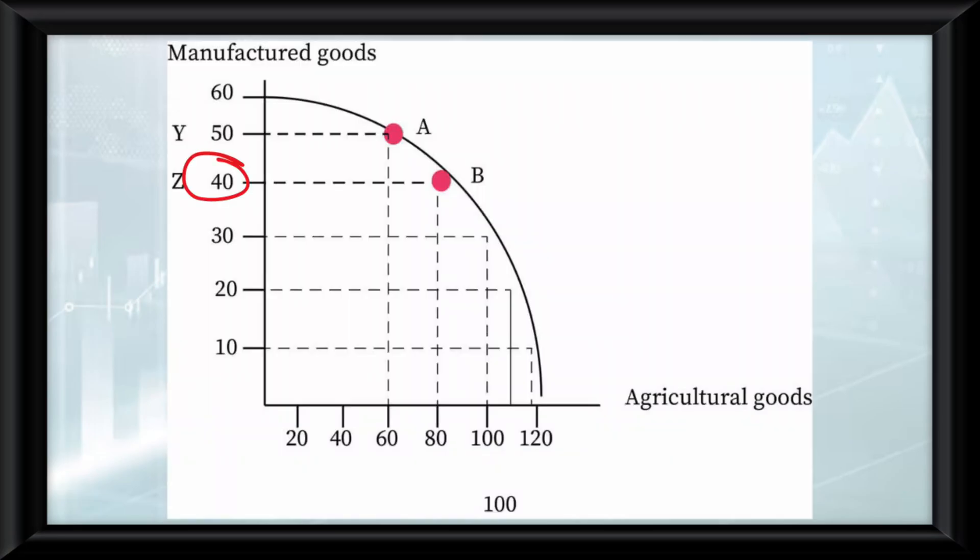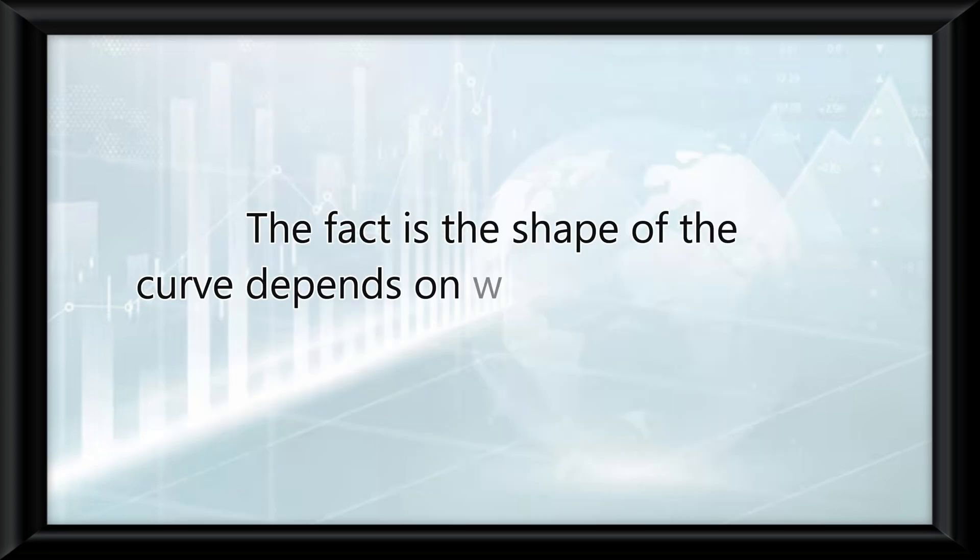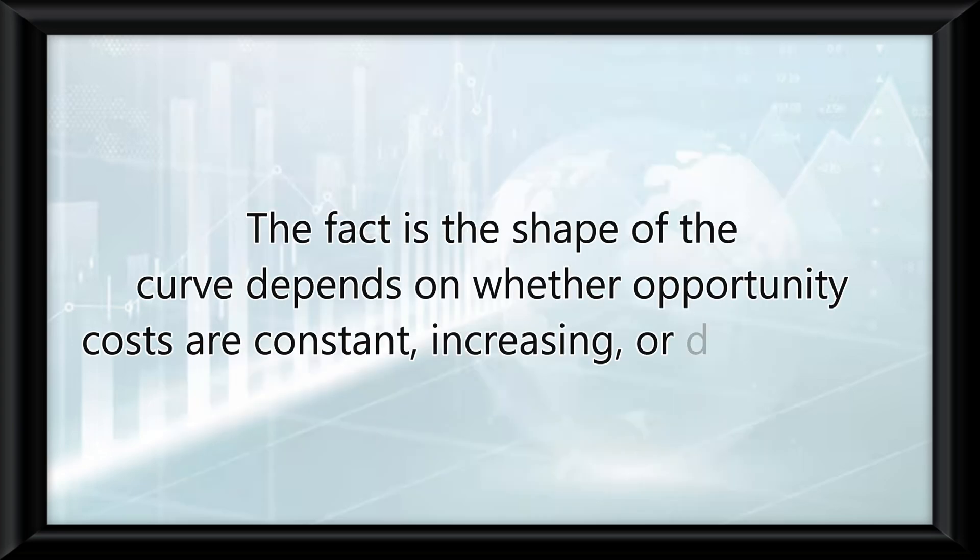The opportunity cost of making 40 manufactured goods is 40 agricultural goods because that is the potential that is being sacrificed. The fact is that the shape of the curve depends on whether opportunity costs are constant, increasing, or decreasing.